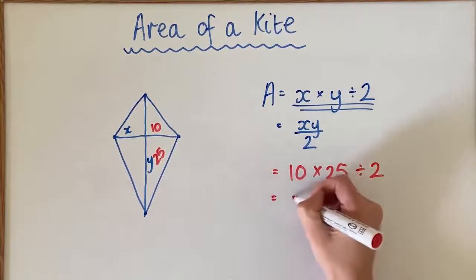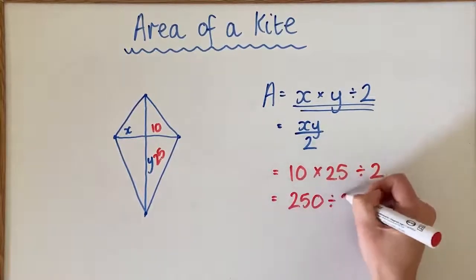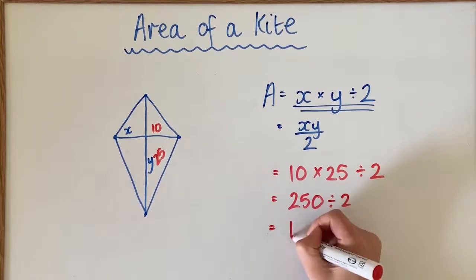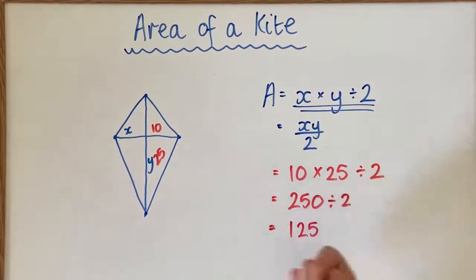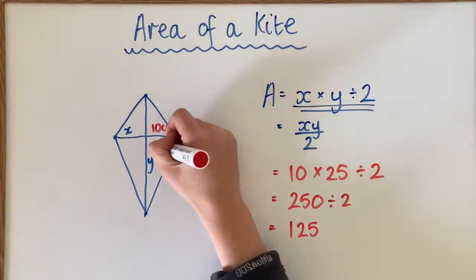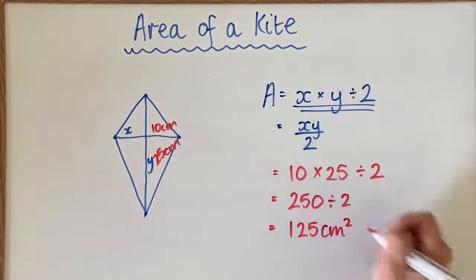I know 10 times 25 is 250, and if I'm going to halve that, I would get 125. If we said this was centimeters, then we would say that this is centimeters squared.